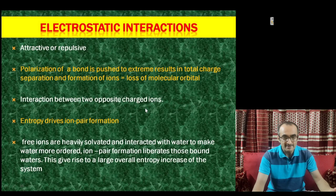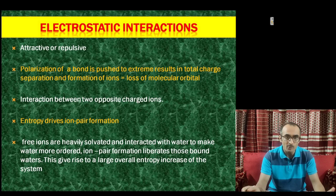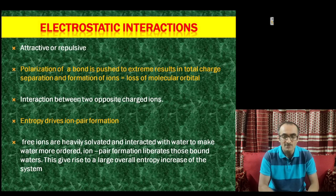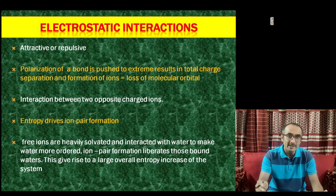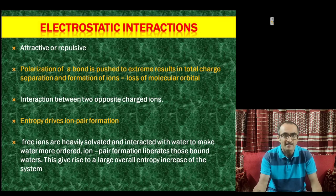Ionic interaction or electrostatic interaction — they are the same thing. They are attractive or repulsive: if two ions come together in close proximity and have the same charge, they repel each other; when they have opposite charge, they attract each other. Ion formation is basically a result of polarization of a bond pushed to the extreme, resulting in total charge separation and formation of ions. For example, in an O-H bond, when you break this bond, the oxygen atom becomes negatively charged. When this negative ion is in close proximity of any positive ion, they attract each other — this interaction is called ionic or electrostatic interaction.